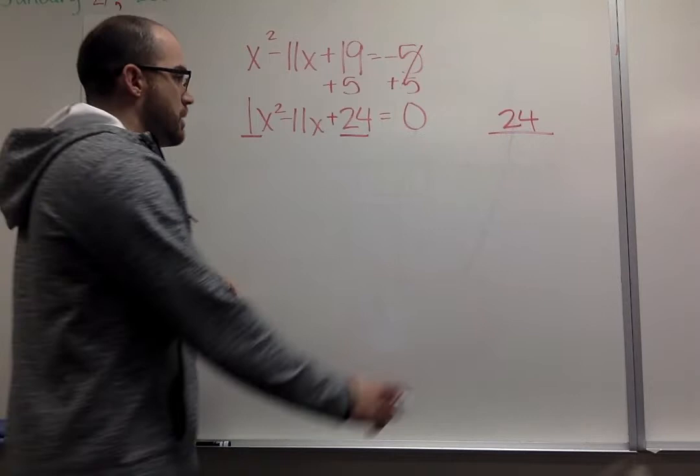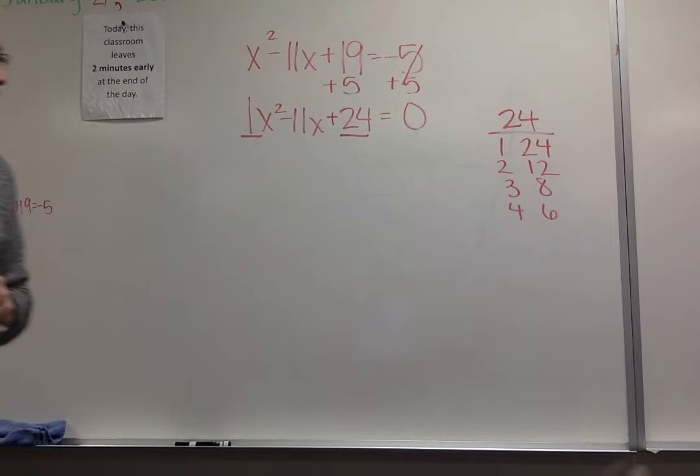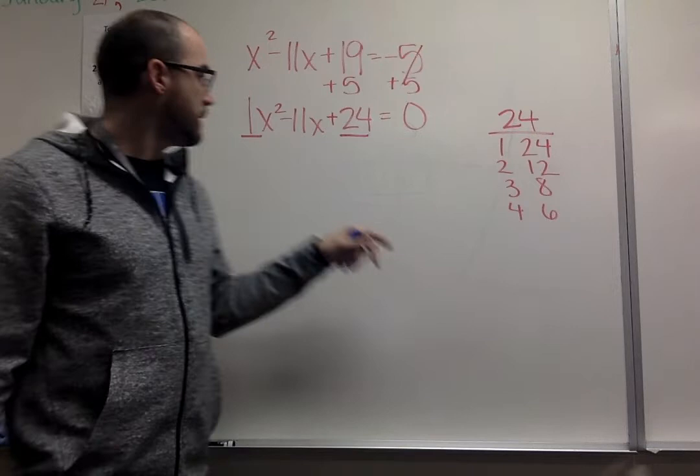I'm going to list my factors of 24. So I've got 1 and 24, 2 and 12, 3 and 8, 4 and 6. Those are all my factors. Students that had me first semester, I talked about when we went through our factoring, whatever your sign is in the middle is the sign of the bigger numbers.